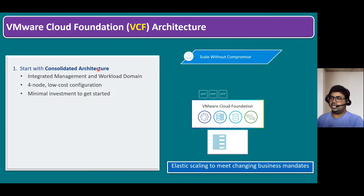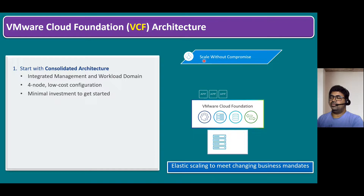For VCF consolidated architecture, the base foundation is four ESXi hosts. VCF combines the software stack using SDDC Manager — integrating vRealize Suite, vSphere, vSAN, and NSX. On top of the VCF software stack, we configure multiple virtual machines — monolithic applications, tier-based applications, or modern container-based applications. VMware officially states VCF is flexible to scale out without compromise; you can add nodes whenever necessary to meet changing business mandates.